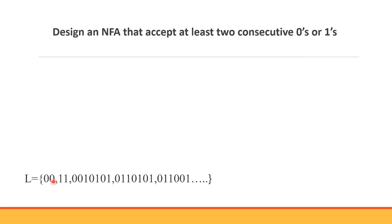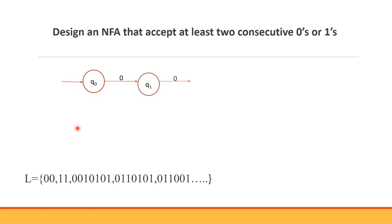Let's think about the minimum strings. We can have 00 or 11 as the minimum accepted strings. If a string contains 00 or 11 as a substring — for example 1001 contains 00 — we accept it. Once the machine sees 00 or 11, we create a loop on 0 and 1 so that everything after is also accepted.